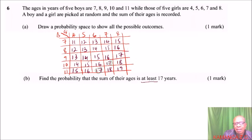We can see here we have 17, we have 17, 17, those are 3. We have 18, that's 4. We have 18 again, that's 5, and 19, so 6. So the probability that the sum of their ages is at least 17 is equals to 6.